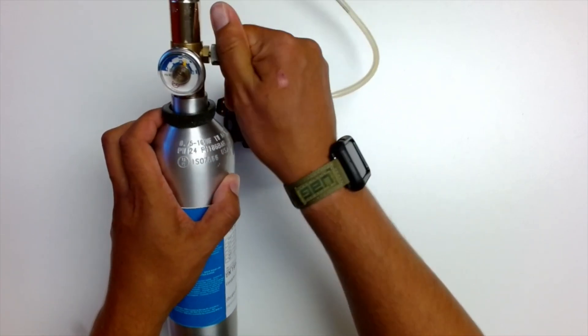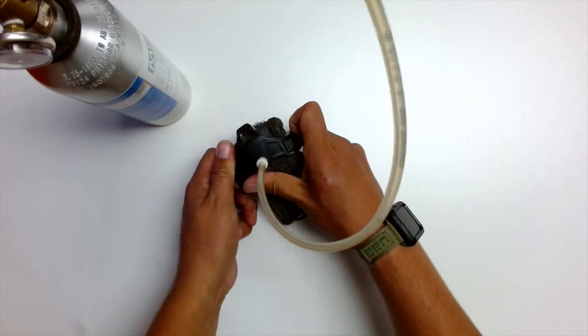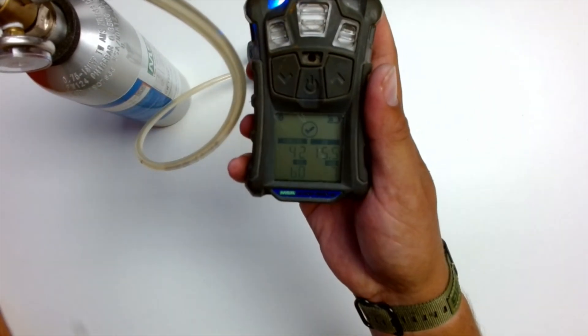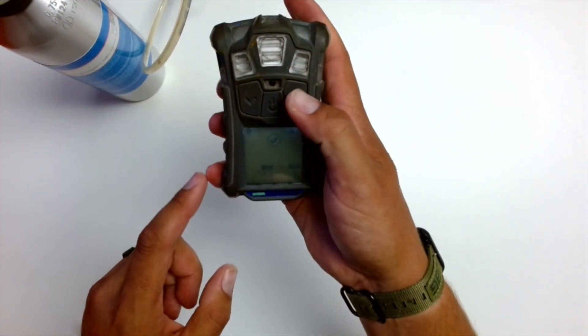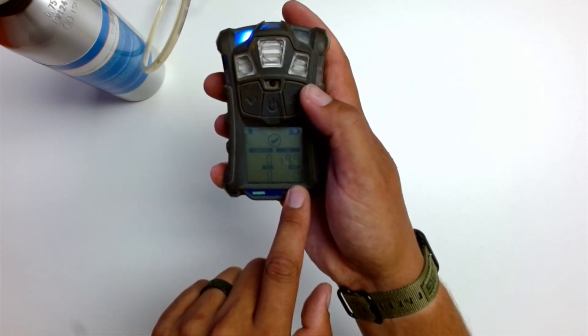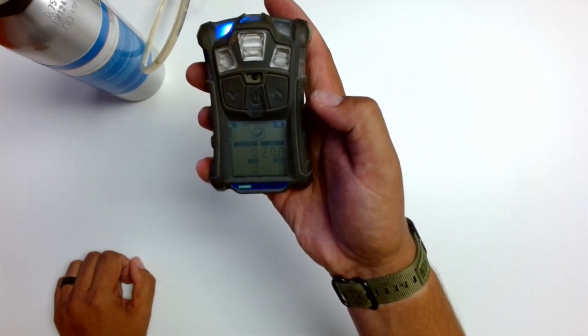And then what we're going to do is turn our fixed flow regulator back off, remove our face clip, and you'll see the values should start to come back down here now. These three are going to hit zero, and then your O2 sensor should come back to 20.8.